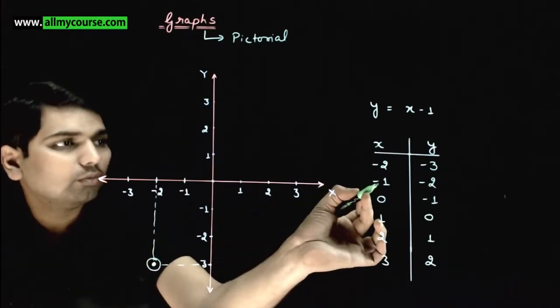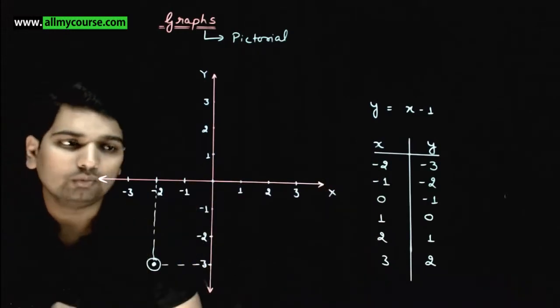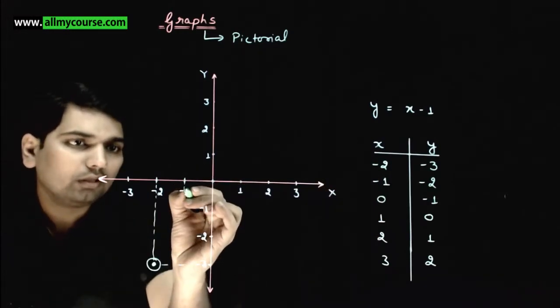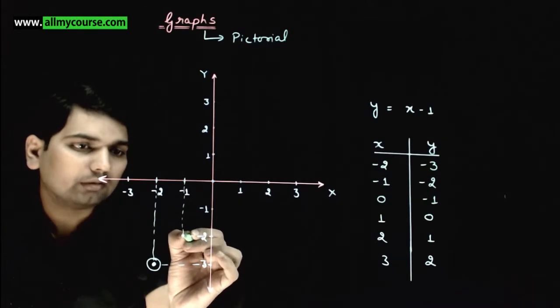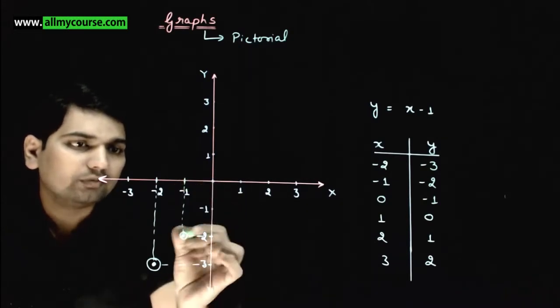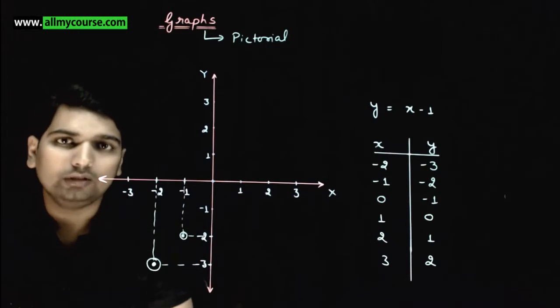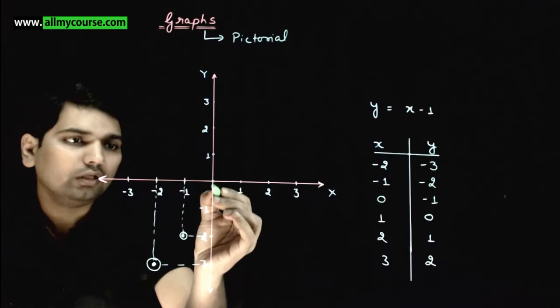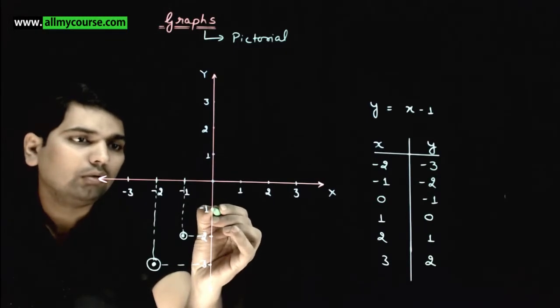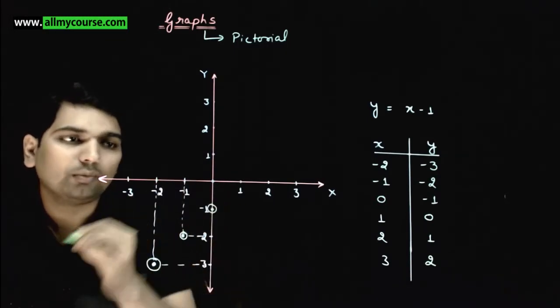For this point, x value is minus 2 and y value is minus 3. That's one point. What's the second point? X is equal to minus 1, y is equal to minus 2. So where will this point belong? This point will fall here. X value became minus 1, y value became minus 2. Third point is 0 comma minus 1. X is equal to 0, and y value is minus 1. This is the third point.